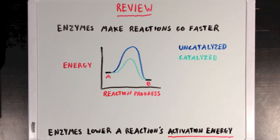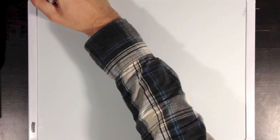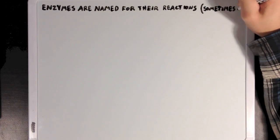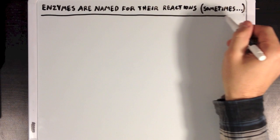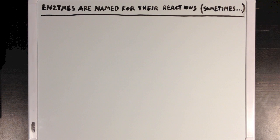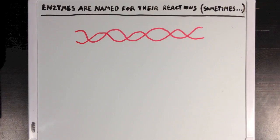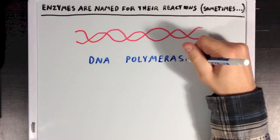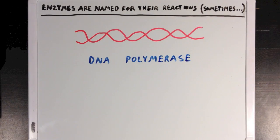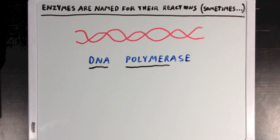Enzymes are generally named for their reactions, which is convenient because it makes it a lot easier to remember what an enzyme does. A great example is that one of the enzymes involved in DNA replication is called DNA polymerase, which is named as such because it acts on DNA and specifically makes polymers of DNA.